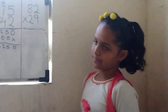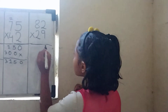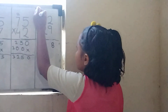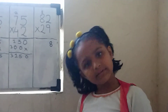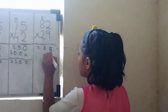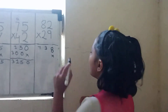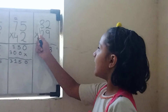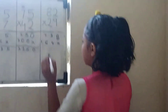And we will take the fourth sum: 82 multiplied by 29. Then we will multiply 9 by 2 equals to 18. Then we will write 8 here and 1 will be carried. Then we will multiply 8 multiplied by 9 equals to 72, and plus 1 we will write 3. We will multiply 2 multiplied by 2 equals to 4, and we will write 4 here. Then we will multiply 8 multiplied by 2 equals to 16, and we will write 6 here and 1 carried over.